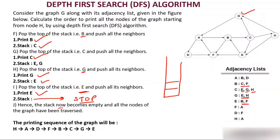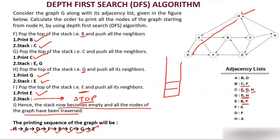The stack is empty and all nodes of the graph have been traversed. The order of traversal is: H, A, D, F, B, C, G, and E. Notice that we go H → A → D — we are going deeper first, which is why this is called Depth First Search. Both BFS and DFS are used for traversing every node of a graph — every vertex — exactly once: not twice, not three times, exactly once.